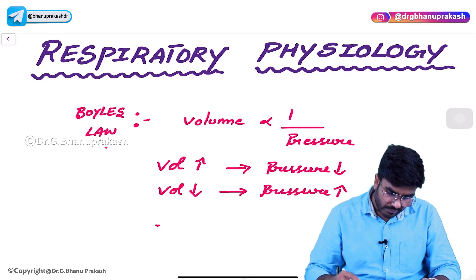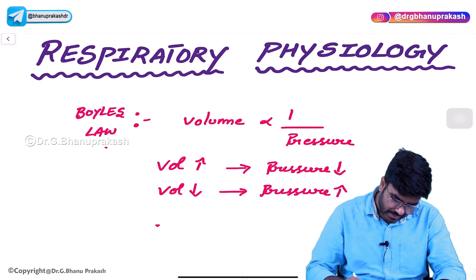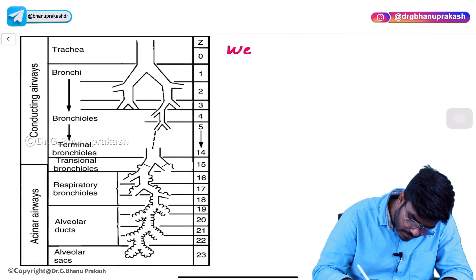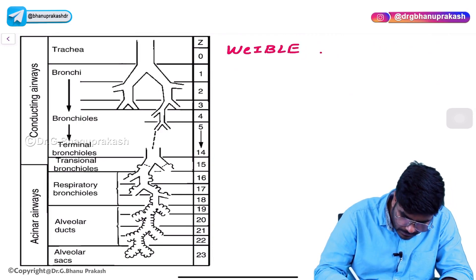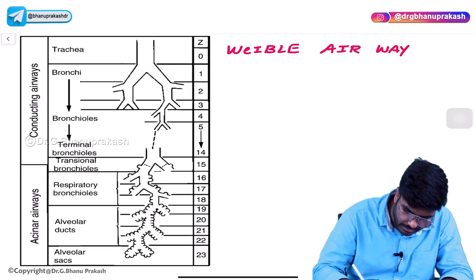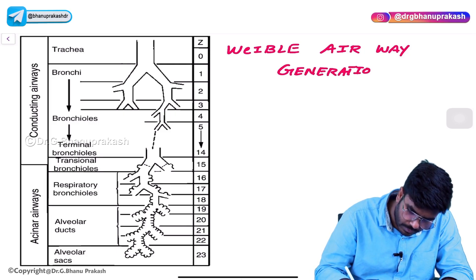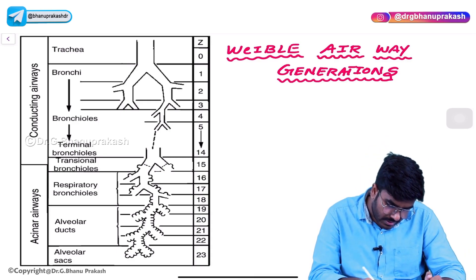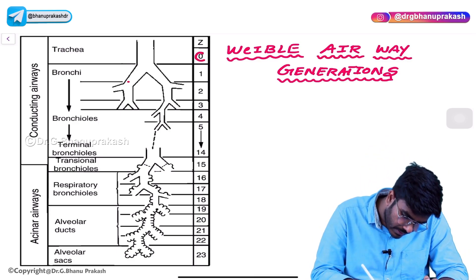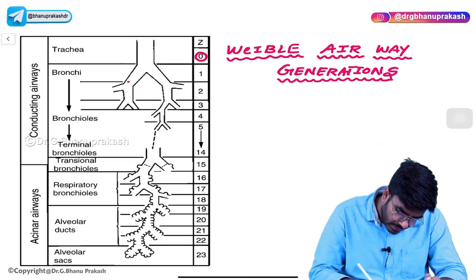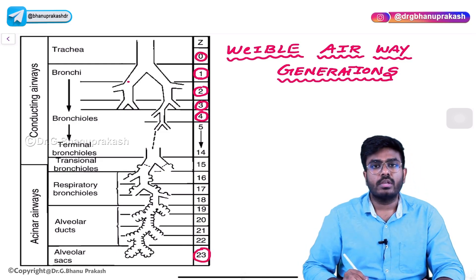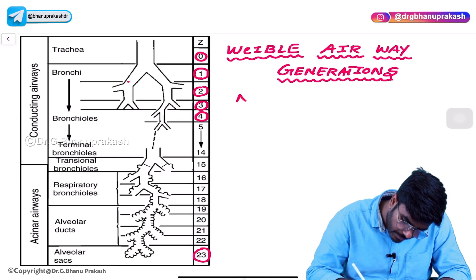After this, let's discuss about Weibel's airway generations. What exactly are these Weibel's airway generations? In this image, I am showing you Weibel's airway generations. We can simply say these are airway segments. Starting from trachea to the alveolus, there are many segments. Trachea is given generation 0. After that there is generation 1, 2, 3, 4, and so on — there are 23 generations in total.